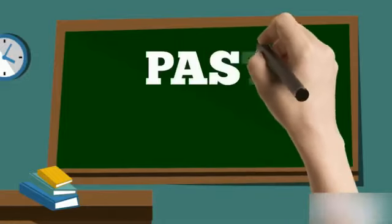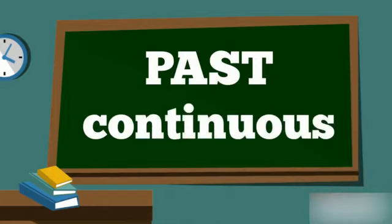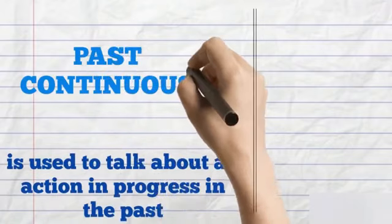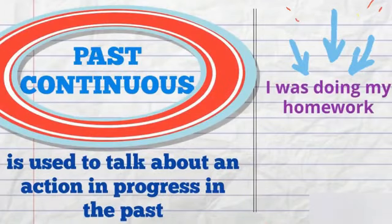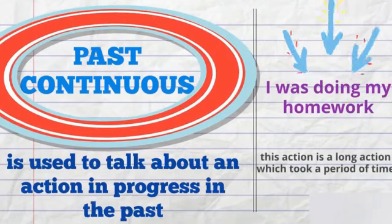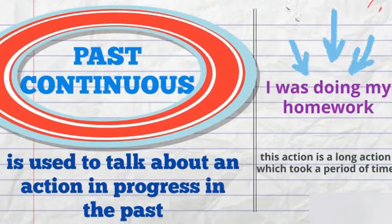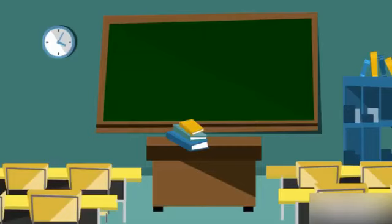Now let's remember the past continuous. The past continuous is used to talk about an action in progress in the past. In the example it says: I was doing my homework. This action is a long action which took a period of time.